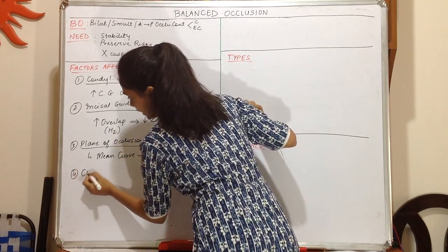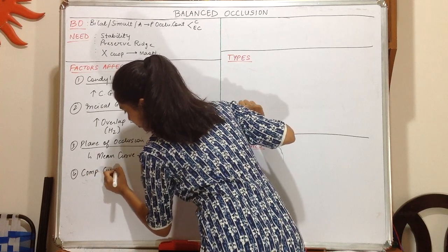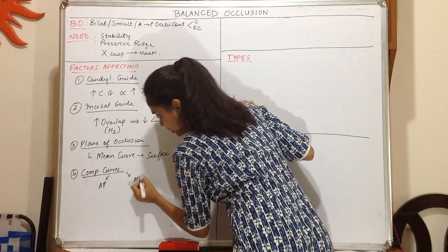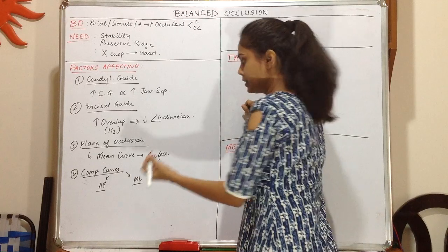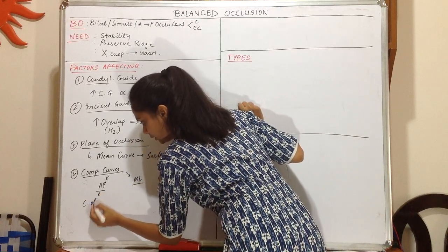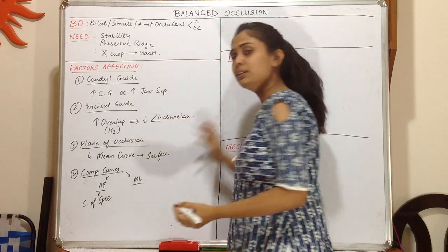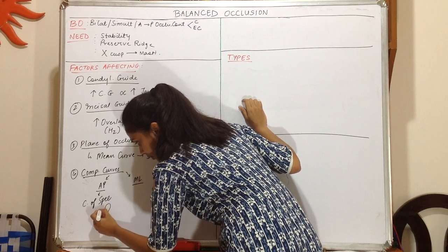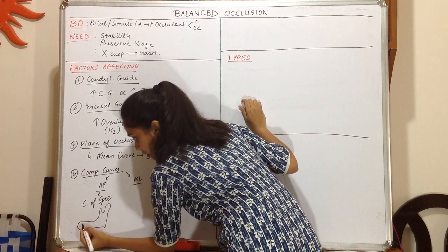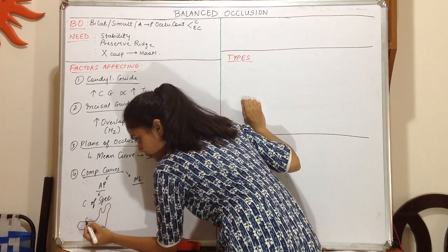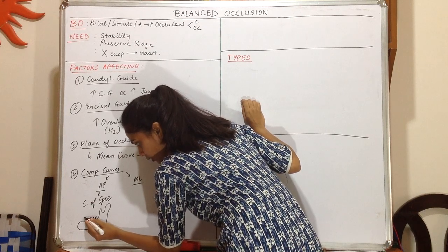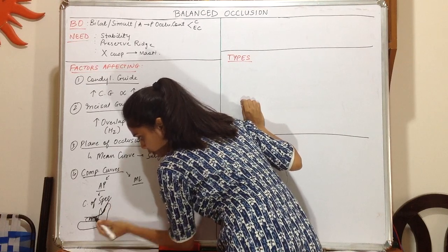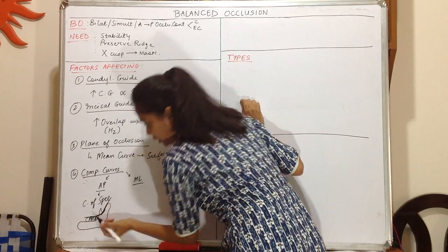Next we have the compensating curves, which are divided into two parts: the anterior-posterior compensating curve and the medial-lateral compensating curve. Under the anterior-posterior compensating curve we have the curve of Spee. The curve of Spee is a line drawn from the cusp tips of the canine touching the buccal cusp tips of the premolar and molar, curving posteriorly to the anterior-most point of the condyle.